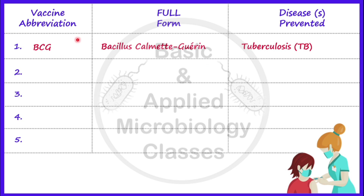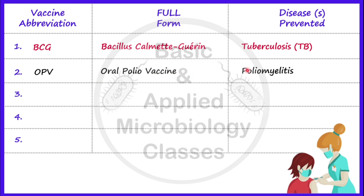Now let's talk about the second vaccine, that is OPV. OPV stands for Oral Polio Vaccine, and it is used for poliomyelitis. Poliomyelitis is a disease caused by the poliovirus, and as its name indicates, the route of administration of this vaccine is oral.